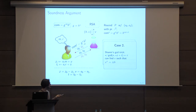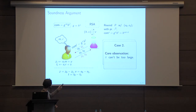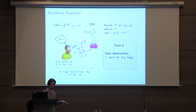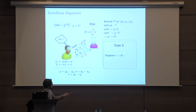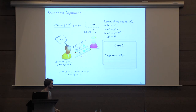Our result starts from this point and relies on a crucial observation: π cannot be too large. The exponent with which the malicious prover solves the challenge cannot be bigger than 8/ε, where ε is the success probability of the malicious prover.